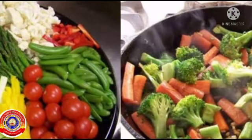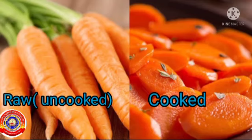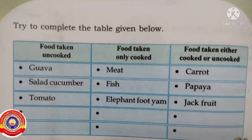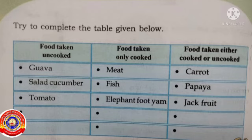Dear children, do we use all food substances cooked? No, right? We use food substances both cooked and uncooked. In your textbook on page number 76, we can see a table showing food taken uncooked, food taken only cooked, and food taken either cooked or uncooked. Three examples are given for each category and you have to write down two more examples. Do this table as an activity in your textbook, and use only pencil to write.